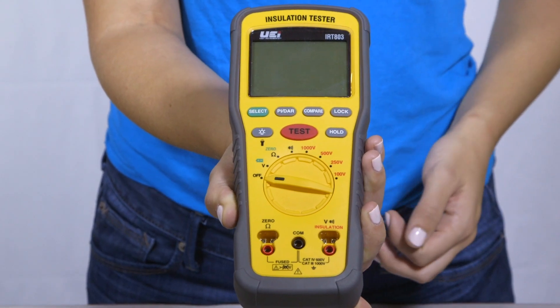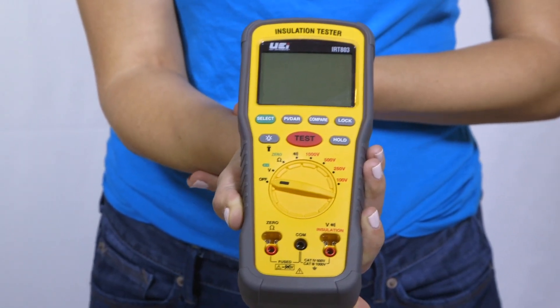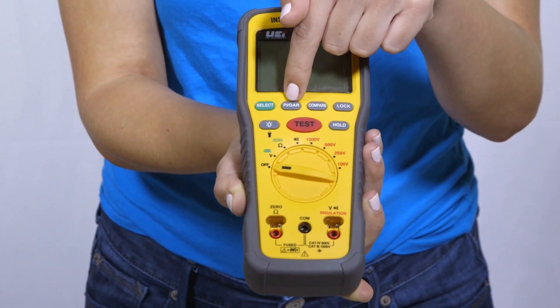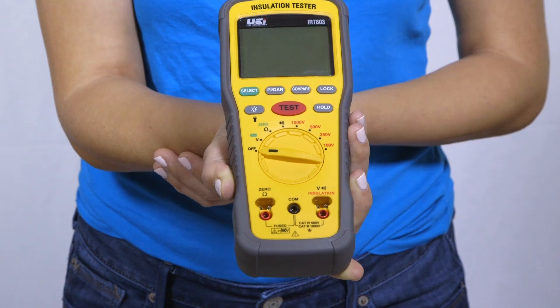The IRT-803 features insulation resistance of 20 giga-ohms, 600 volts AC-DC, earth bond resistance of 20 kilo-ohms, PI-DAR test, hold, and lock reading.